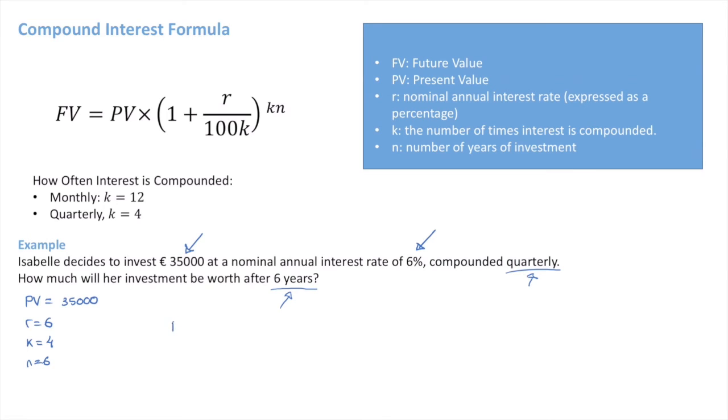And we can go right ahead and say FV equals 35,000 times 1 plus 6 over 100 times 4, so that's 4.